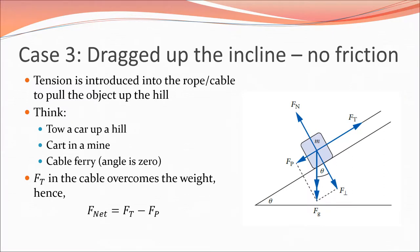Now we're looking at scenarios going up the incline. The difference here is we now have a tension force pulling the block back up the incline, which overcomes the force acting parallel to the inclined surface. Tension is introduced by some rope or cable to pull it up the hill. Think of towing a car up a hill, a mine cart being pulled out of a mine, or a cable ferry. The force of tension in the cable has to overcome the force parallel to the incline — whichever is bigger determines whether the block moves up or not.